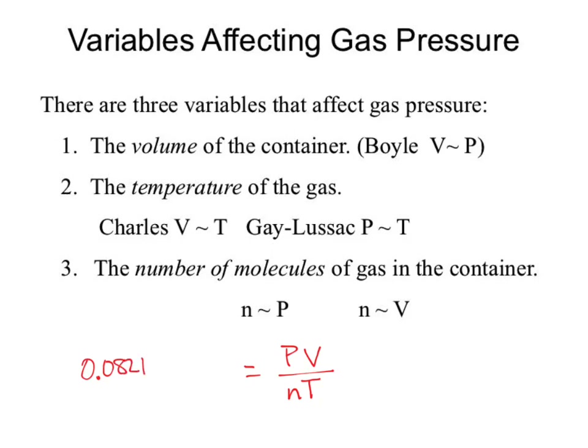What are the units on that constant? Standard pressure in atmospheres, standard volume in liters, moles in moles, and temperature — degrees Celsius doesn't work well because we get negatives, which would make the constant positive or negative depending on temperature. So we use Kelvin, which as the absolute scale is only positive. They named that constant R.